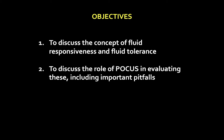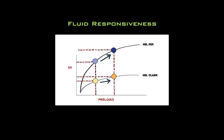To highlight the differences between these two concepts, let me present a case. Let's compare two patients, Mr. Clark and Mr. Hui. These are both patients admitted to the ICU with septic shock on the same dose of pressors, escalating lactate levels, and decreasing mean arterial pressures. The question becomes whether these patients will require more fluid, more pressors, or more inotropes.